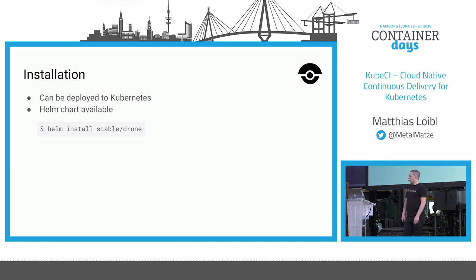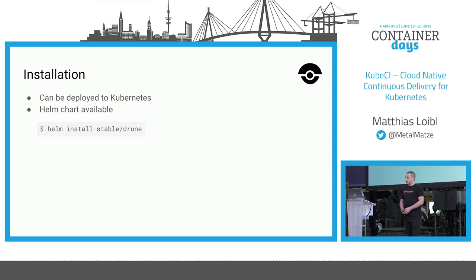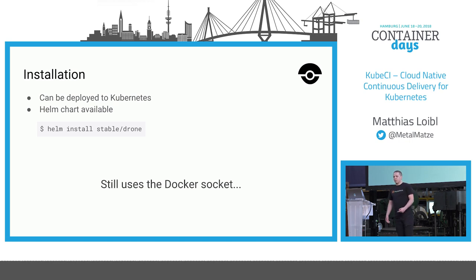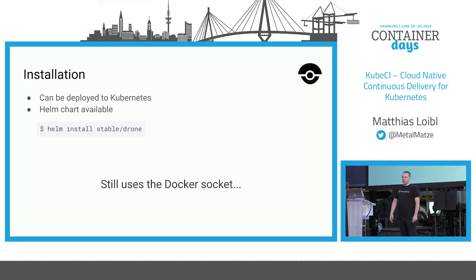Docker is the default runtime for Drone, but you can also use the official Helm chart to deploy Drone to your Kubernetes clusters. However, it still uses the Docker socket — so even though you're running on Kubernetes, you're still relying on the Docker socket. And whoever has access to the Docker socket is effectively root on the cluster, so that's kind of bad.